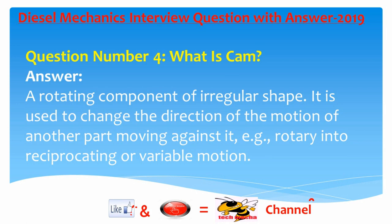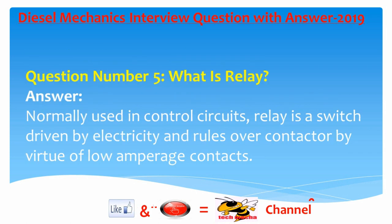Question number four: What is a cam? Answer: A rotating component of irregular shape used to change the direction of the motion of another part moving against it, e.g., converting rotary motion into reciprocating or variable motion.